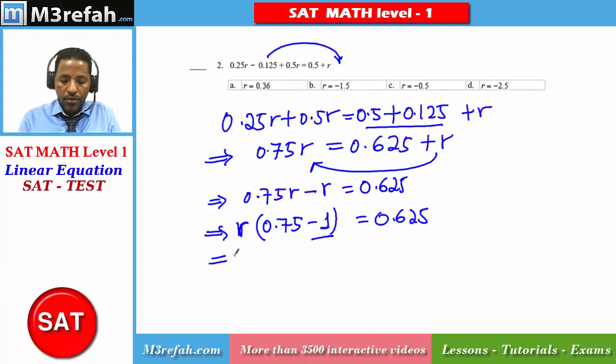The next step is to simplify the term inside the bracket. 0.75 minus 1 is negative 0.25r which is the same as 0.625.